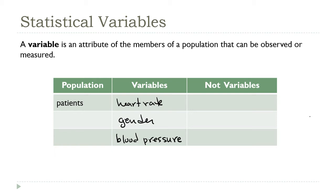Now, what about things that aren't variables? The patients themselves don't fit into this category. Students sometimes say something like 'the patients on my floor,' but the patients themselves are the members of the population, not the variables. Think about your first visit to a doctor's office — you're given a form asking for personal information. The individual items you're asked for, like name, address, and gender, are all variables.